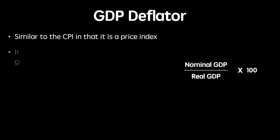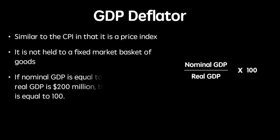The GDP deflator is similar to the CPI in that it is a price index, but it is not based on a fixed market basket of goods. It includes new goods and services as well, which could arguably make it a better indicator of changes in the price level. To solve for the GDP deflator, you divide nominal GDP by real GDP and multiply by 100.